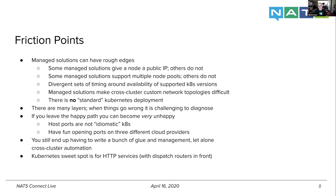When things go wrong, it's challenging to diagnose. You have a network glitch — is it the VM, the NATS server, Kubernetes, your DNS provider? It's all very complicated. If you leave the happy path, things can be very unhappy. Host ports are not idiomatic Kubernetes; our use of them is a wart with downstream effects. At the end of the day, you still have to write a lot of glue for management, let alone cross-cluster automation — and that's why you're now seeing tooling like Helm filling that gap.